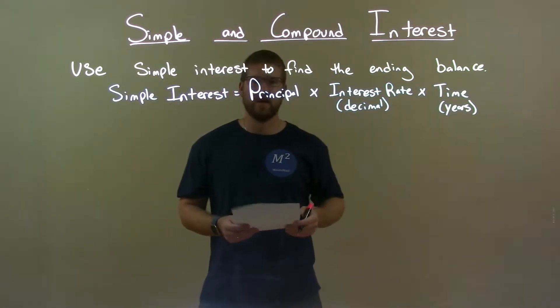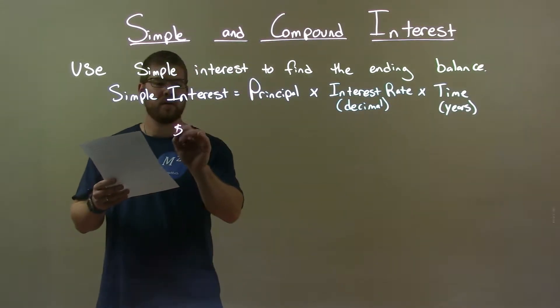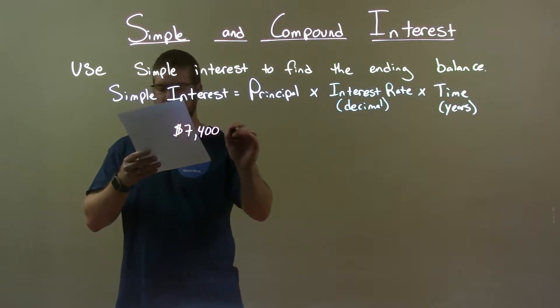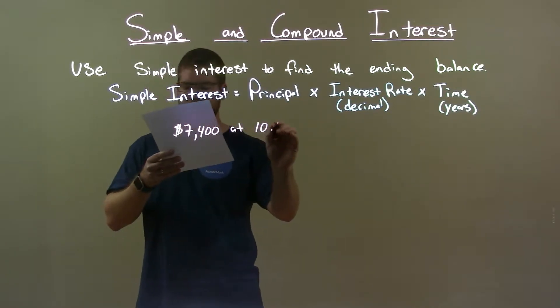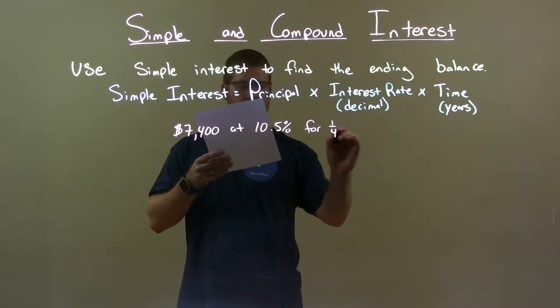Use simple interest to find the ending balance. If I was given this problem, $7,400 at 10.5% for 1 quarter years.